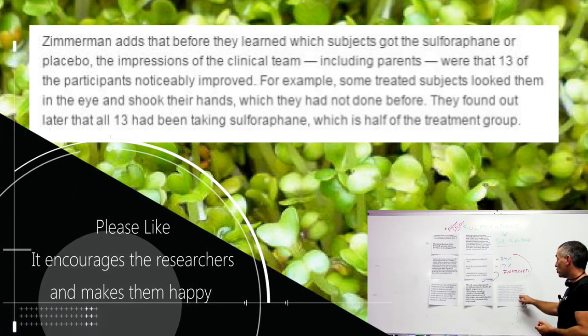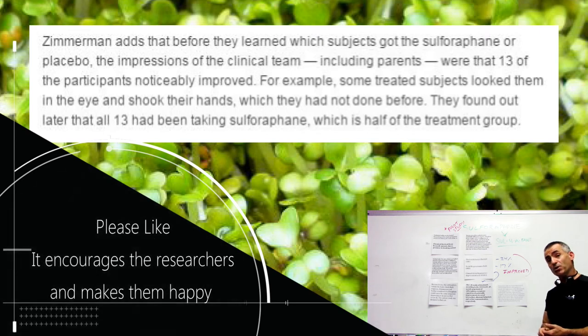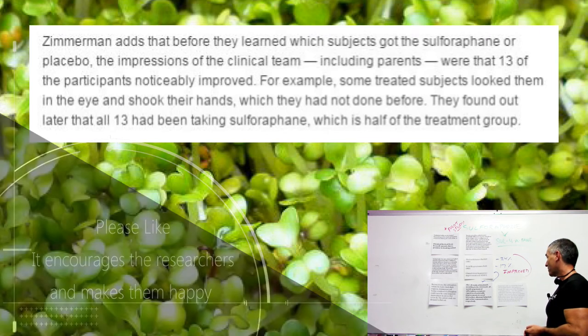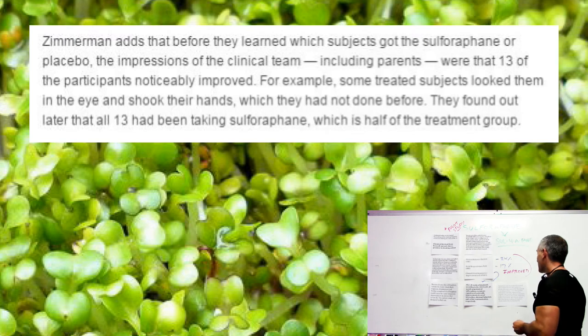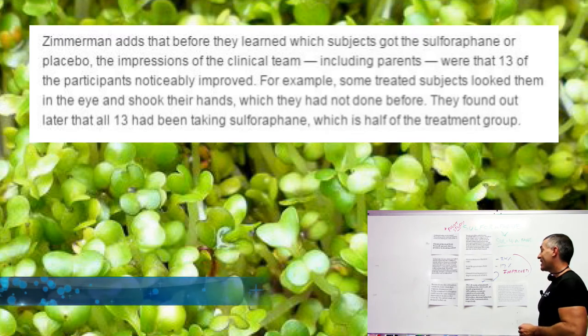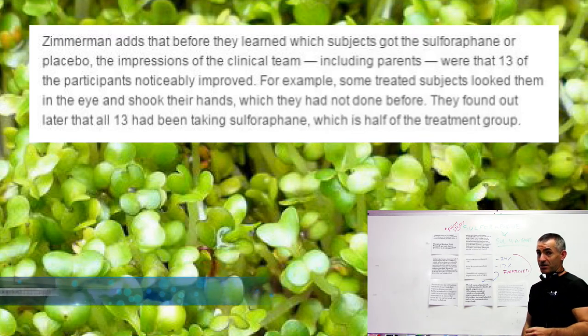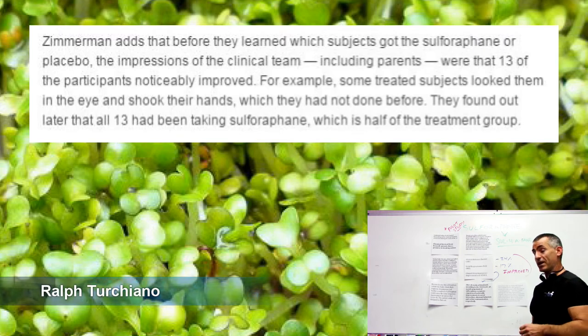For example, some treated subjects looked them in the eye and shook their hands, which they had not done before. They found out later that all 13 had been taking the broccoli sprout chemical sulforaphane, which is half of the treatment group, which is pretty amazing.